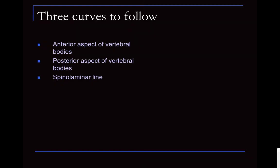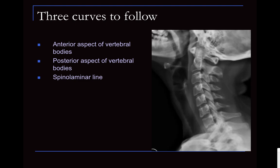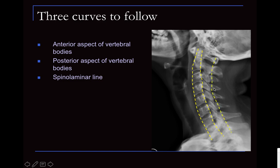After deciding the radiograph is adequate, we proceed with A — the alignment. It is important to look at three lines in the lateral radiograph of the cervical spine. First is the anterior vertebral line drawn along the anterior margins of the vertebral bodies. Next is the posterior vertebral line drawn along the posterior margins. Then you have the spinolaminar line at the junction of the spinous process and lamina. All three lines should be smooth, with no sudden disruptions, and should be parallel to each other, suggesting normal alignment.